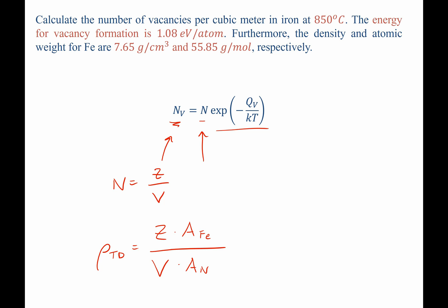Rearranging to get Z over V by itself, this is equal to the density of iron multiplied by Avogadro's number and divided by the molecular weight of iron.